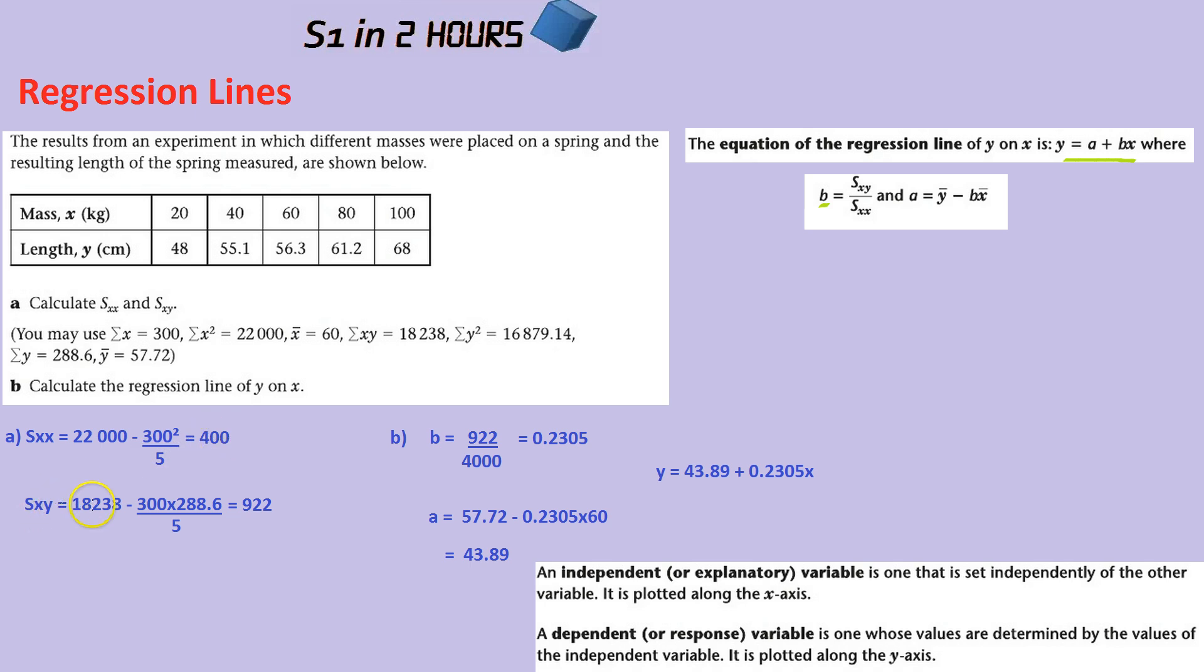What about sxy? Well again, they've given you most of the data you need. We know the sum of xy is 18,238, take away the sum of x times the sum of y, which they've given you, divided by n again, which is five. If you work that out on the calculator, being very careful when you're typing in the calculator, probably the number one cause of lost marks for regression lines is simply poor use of the calculator. So be very careful you're doing your fractions correctly, remembering the minuses, etc. That's 922. Putting that into the formula that they give you in the formula sheet, you get 922 divided by 400, so b is 0.2305.